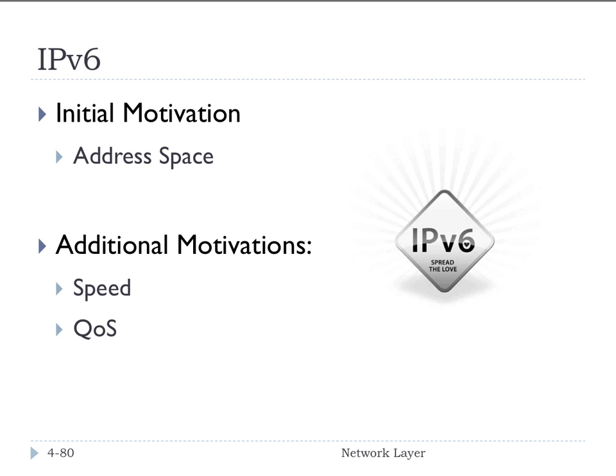There are some additional motivations that also address things like improving the speed of processing and forwarding on routers, as well as providing quality of service. There are some changes in the header that facilitate quality of service, so if you need to provide different data flows or different kinds of service, you can do that.